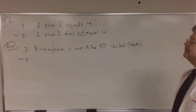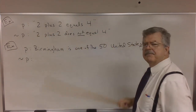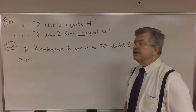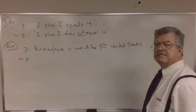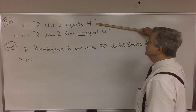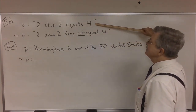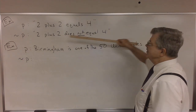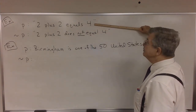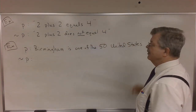Let P be the statement '2 plus 2 equals 4.' What would the negation of P be? Probably you'd say '2 plus 2 does not equal 4,' and that is the negation. If the original statement is true, then '2 plus 2 does not equal 4' is false. If the original statement were false, then it must be true that '2 plus 2 does not equal 4.'